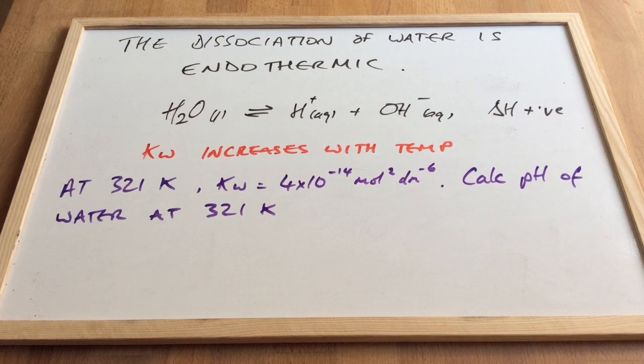So if you want, you can have a go at this calculation that I've put up there in purple. At 321 Kelvin. So that's a higher temperature. We've got KW increased to 4 times 10 to the minus 14 mole squared dm to the minus 6. Have a go at calculating the pH of water at that temperature.